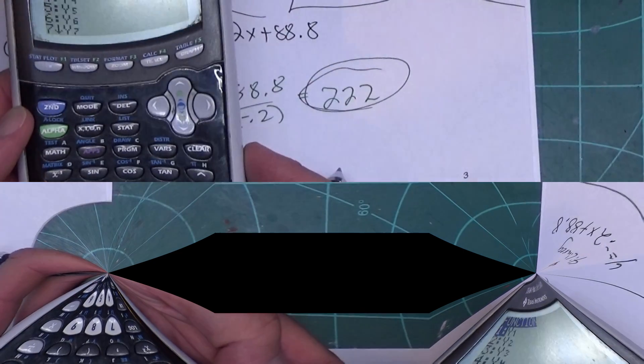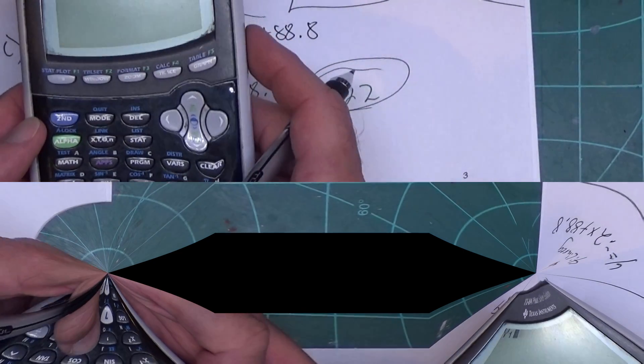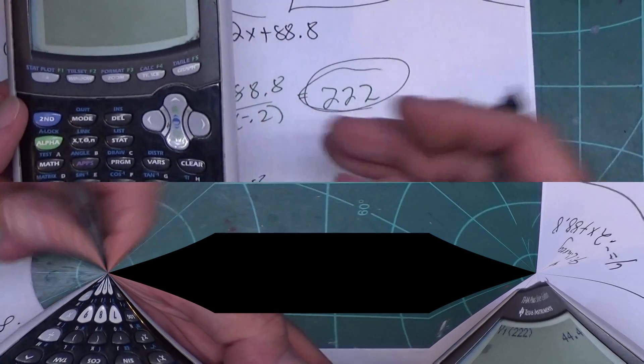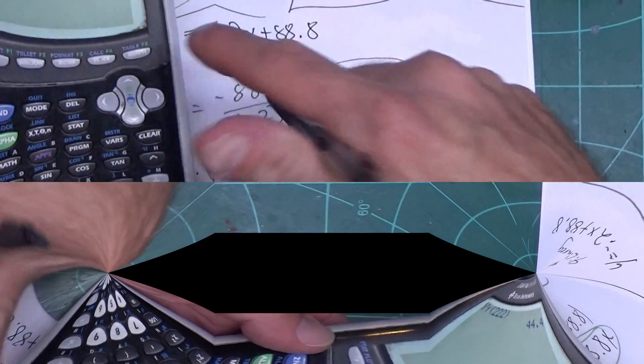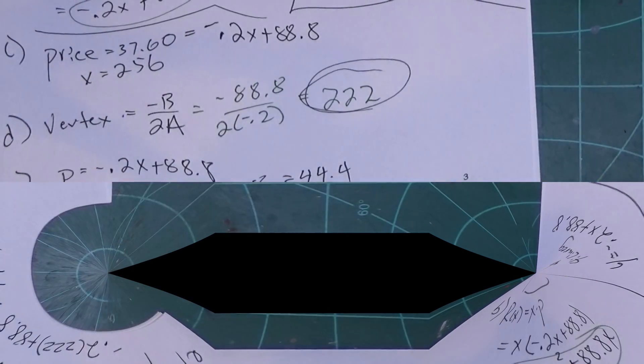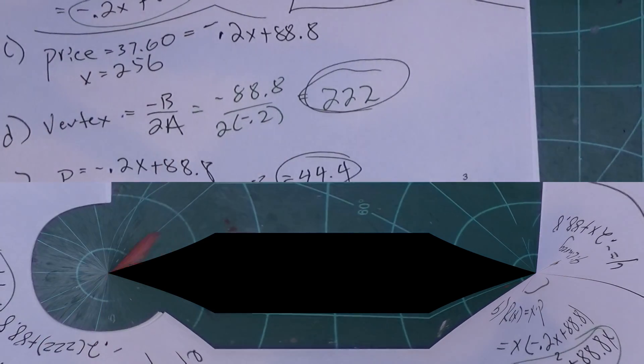Remember I have my demand in y1, so I can shortcut this. I can press vars over to y-vars, press enter, enter, put parentheses 222, close parentheses, enter. The calculator will plug it in that demand function for me and tell me 44.4 is my answer.